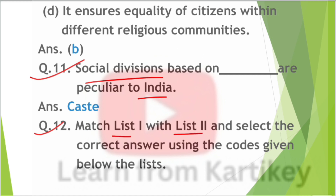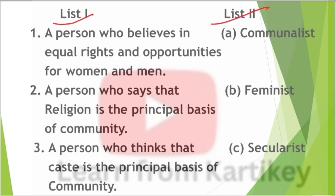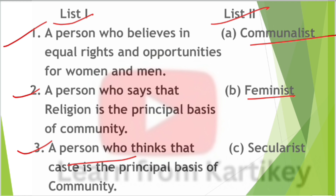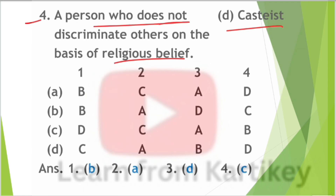Question number 12: Match List 1 with List 2. A person who believes in equal rights and opportunities for women and men — matches with feminist. A person who says religion is the principal basis of community — matches with communalist. A person who thinks caste is the principal basis of community — matches with casteist. A person who does not discriminate others on the basis of religious beliefs — matches with secularist.